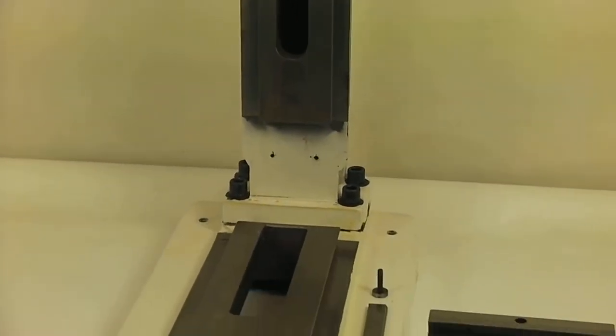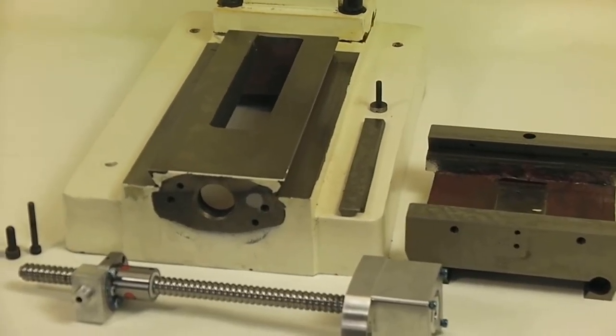Now the mill is stripped down to just the column and the base. We're going to do the X and the Y and then the Z.